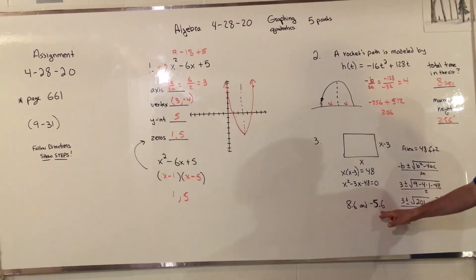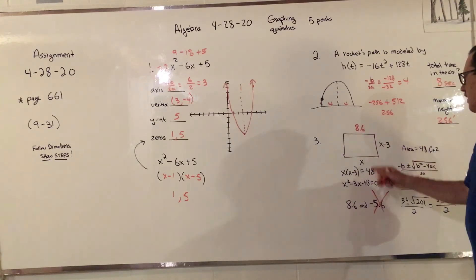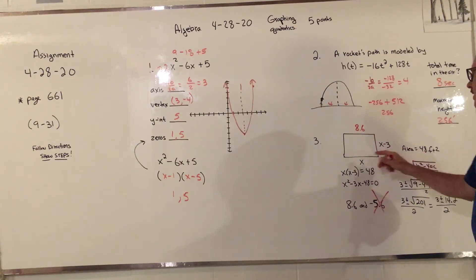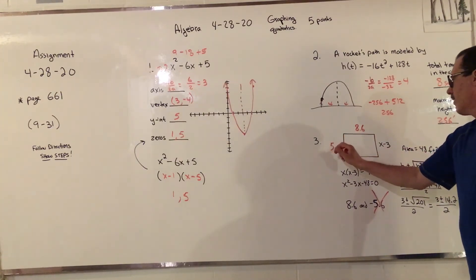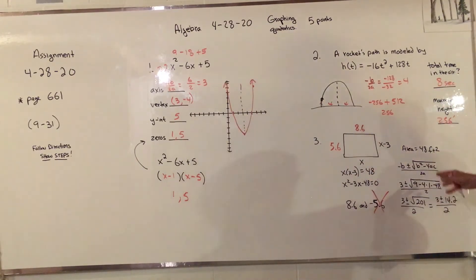Well, a rectangle cannot have a negative, so that's just gone. I realized that X was 8.6, that would be the length, and then 8.6 minus 3 would be the width, 5.6. So they do give you a rectangle problem and I'd probably use the quadratic to do it rather than complete the square, but that's up to you.